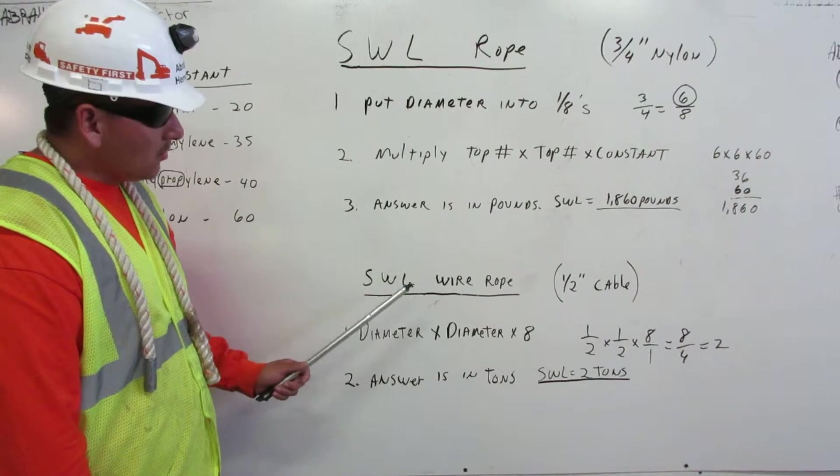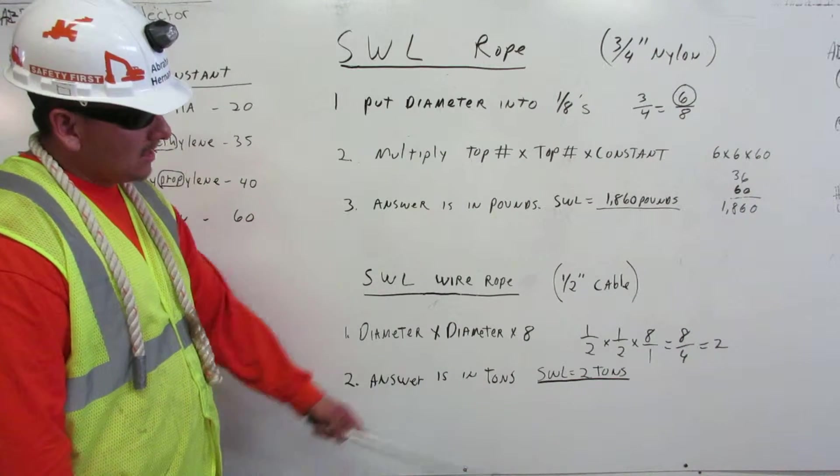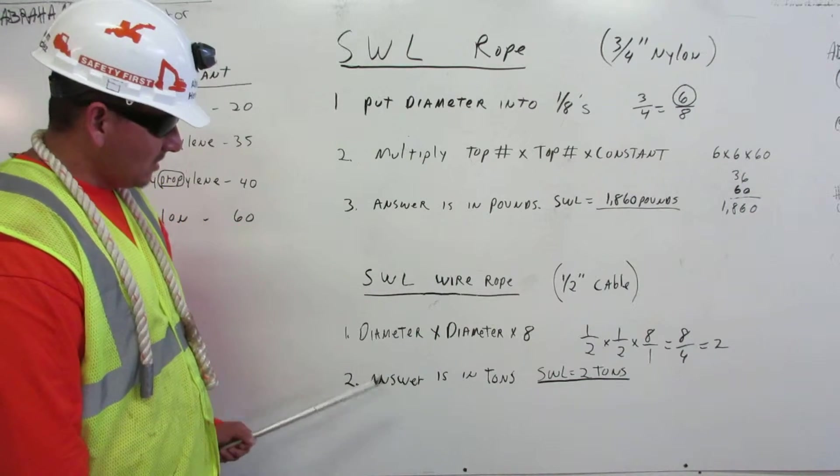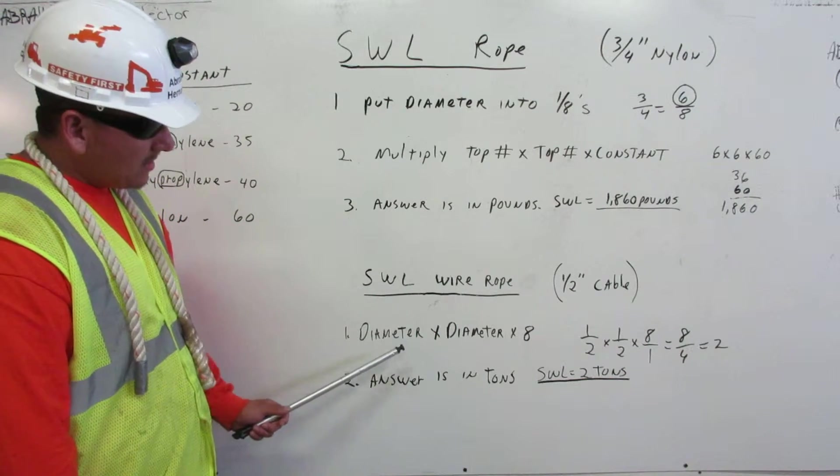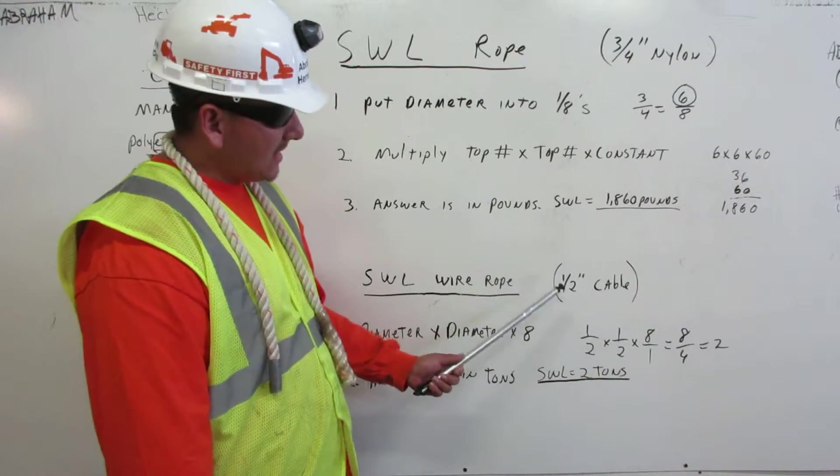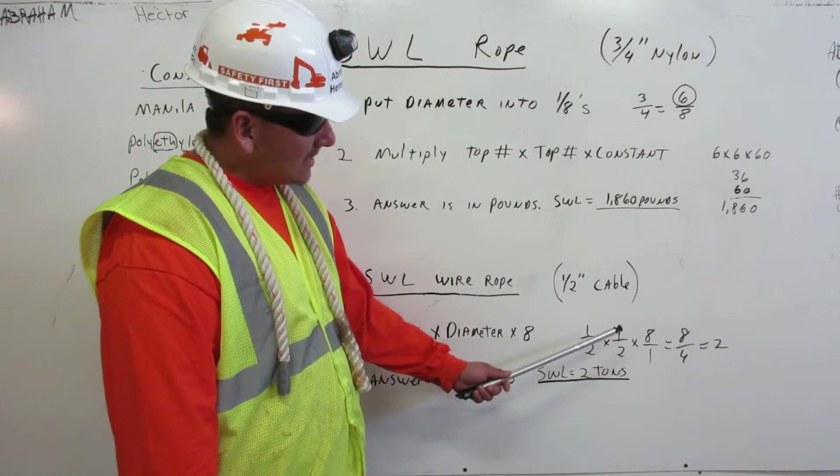Now the safe working load for wire rope. In this case I'm going to be talking about half inch cable. Number one, diameter times diameter times eight. So the diameter is half, so it's half times half times eight.